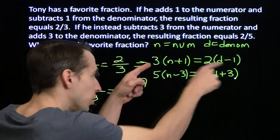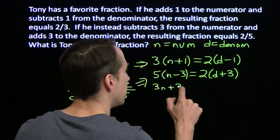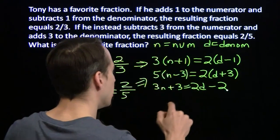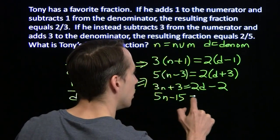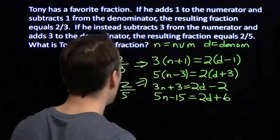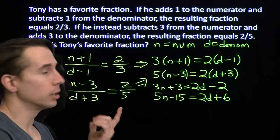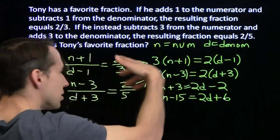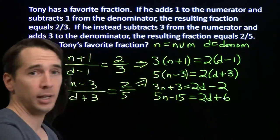We'll get 5 times n minus 3 equals 2 times d plus 3. Alright. So now we'll expand both sides of this equation and we'll have 3n plus 3 equals 2d minus 2. And down here, 5n minus 15 equals 2d plus 6. And just like that, we've taken these two equations here. This is a system of equations, but they're not linear. But once we clear out the denominators, multiply both sides by the denominator, suddenly we've turned this system that doesn't look like a system of linear equations into a system of linear equations. And we know how to handle this.